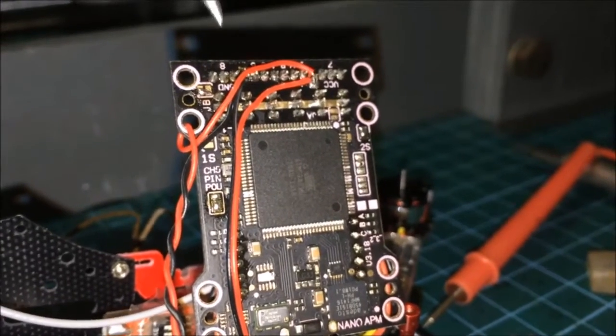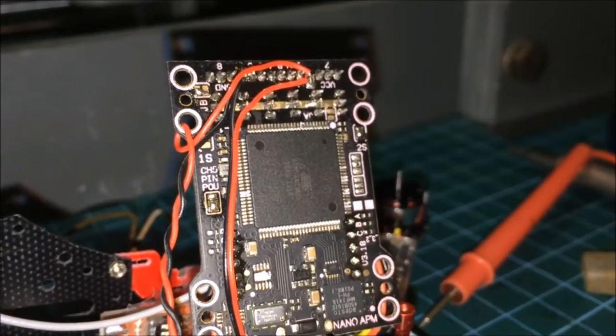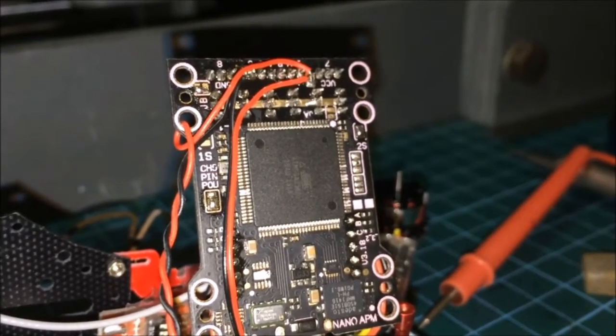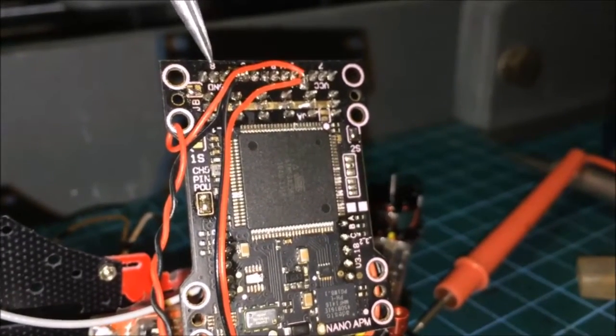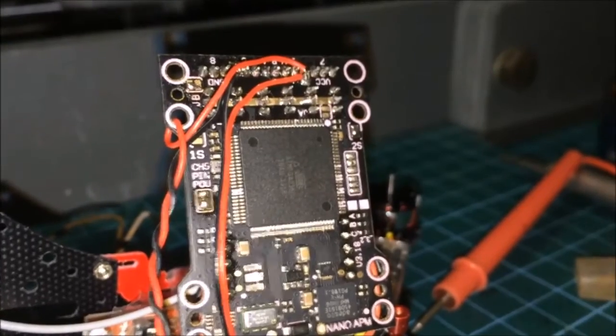All right. I have the VCC and the ground soldered up. But when I hook up with LiPo, I realized that it only powers the four ESCs via the distribution rails. And there's no power to the APM board.